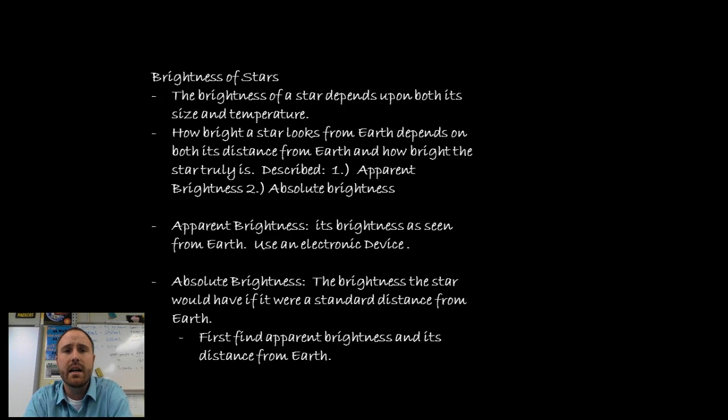Brightness of stars depends on both the size and the temperature. We can determine how bright a star looks from earth and we can describe it in one of two ways. The first way is the apparent brightness or what we would consider how bright is it from earth. To determine the apparent brightness we use an electronic device which basically tells us what the brightness is.